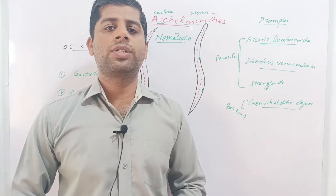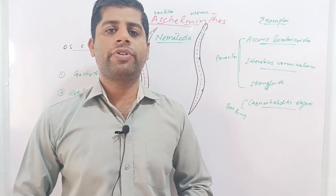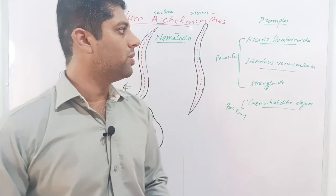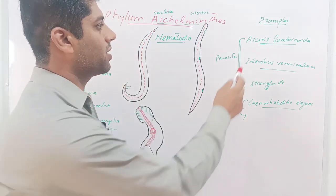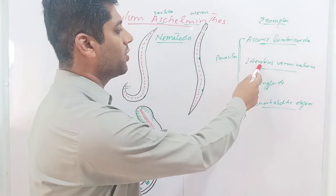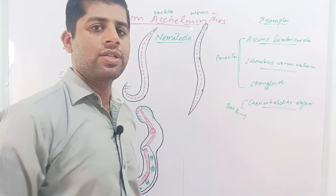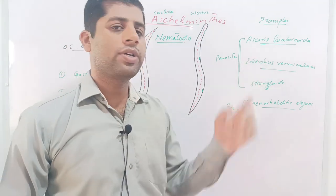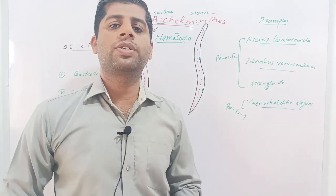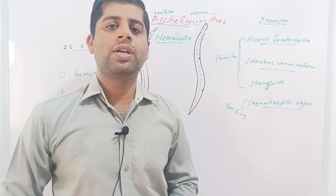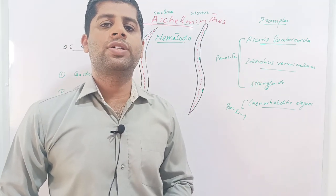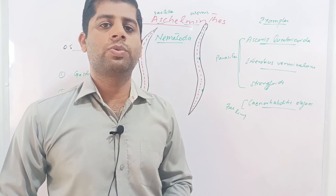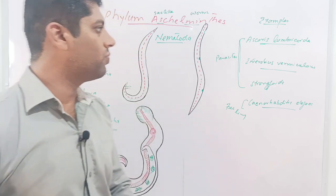We are going to discuss the general characteristics of phylum Nematoda or phylum Aschelminthes. We will explain these two examples — Ascaris lumbricoides and Enterobius vermicularis — which are very important due to their parasitic nature, causing infestation and infections in animals as well as human beings.